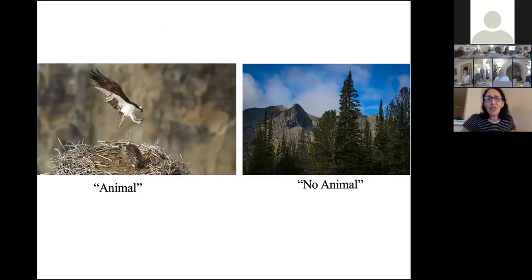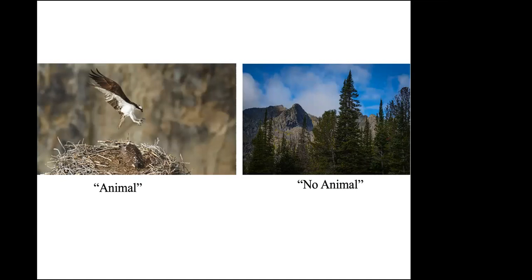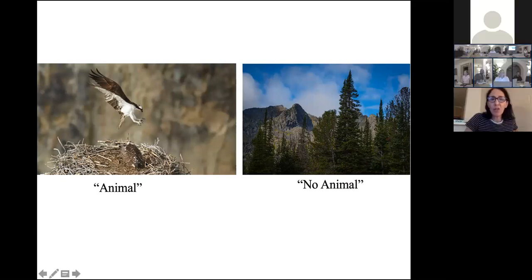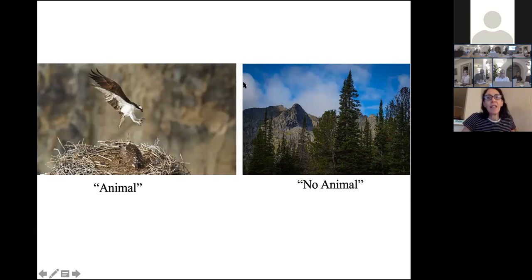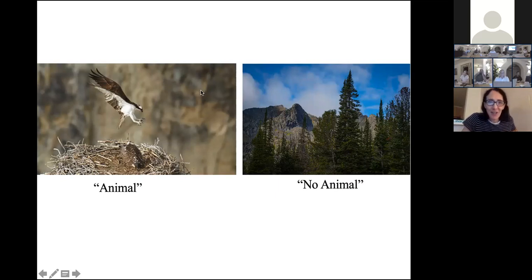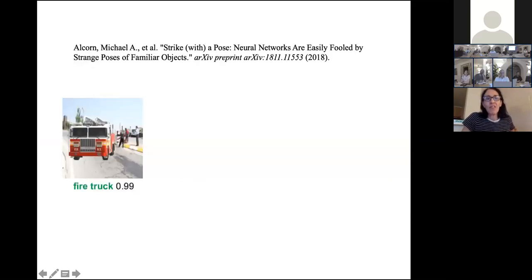A very simple example: one of my students trained a deep neural network to classify images as having animals or not. For his PhD, he looked into what the machine had actually learned. Even though it did very well on a dataset of National Geographic images, part of what it had learned was that when there's an animal in the photo, the background is blurrier — and that blurry background was an easier statistical clue to classify correctly.